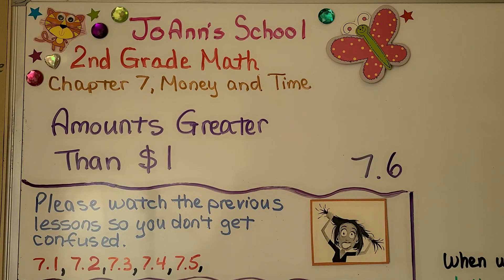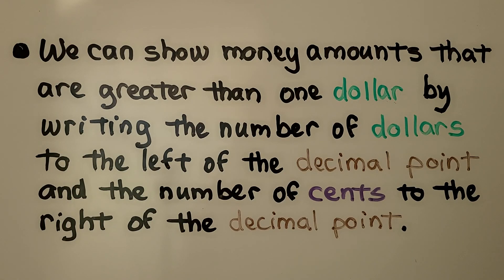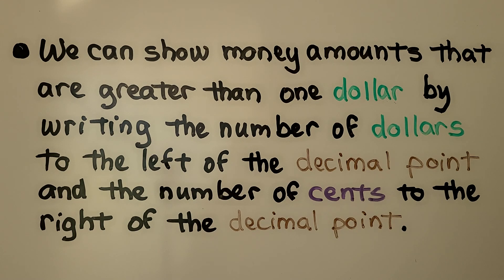Lesson 7.6: Amounts Greater Than $1. We can show money amounts that are greater than $1 by writing the number of dollars to the left of the decimal point and the number of cents to the right of the decimal point.